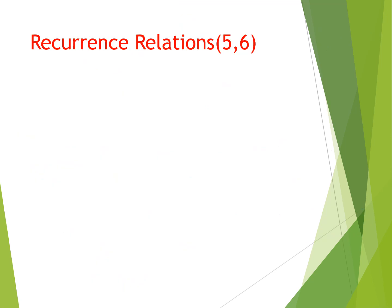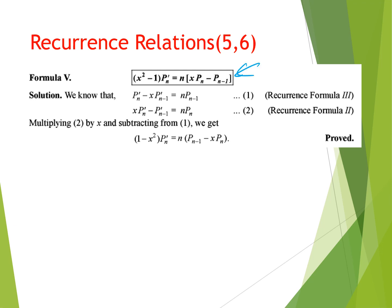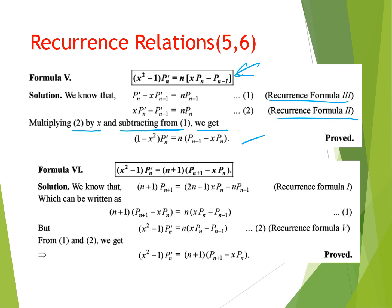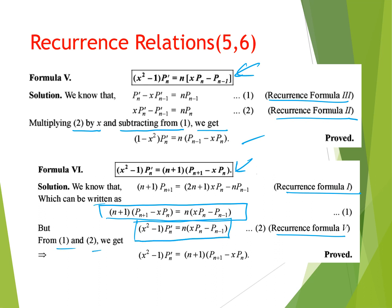For the fifth recurrence relation, (x²-1) P_n'(x) = n x P_n(x) minus n P_{n-1}(x): from recurrence relations 2 and 3, multiply recurrence relation 2 by x and subtract from recurrence relation 3 to get the fifth. For the sixth recurrence relation, (x²-1) P_n'(x) = (n+1) P_{n+1}(x) minus x P_n(x): use recurrence relation 1 and recurrence relation 5 together to derive it.